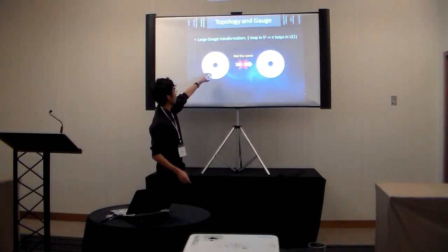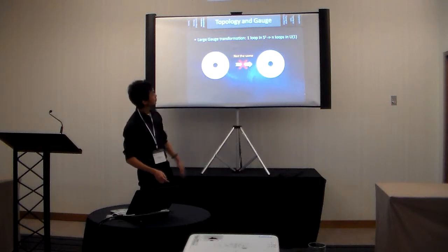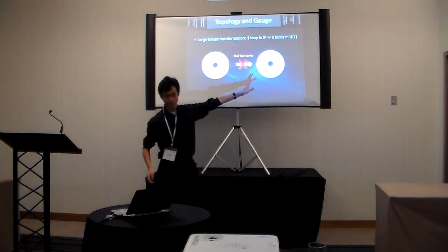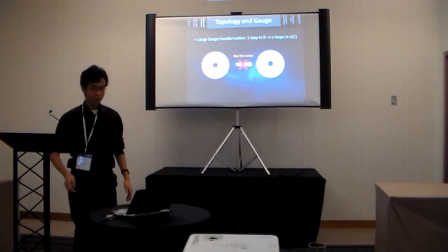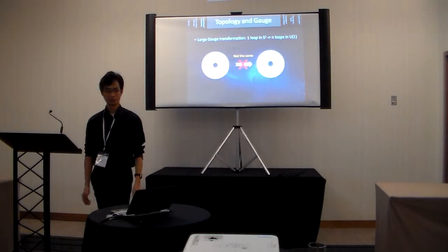So suppose I pick a large-gauge transformation that goes zero loops around the gauge, which is identity. And another gauge transformation that goes one loop around the gauge. There's absolutely no way we can deform this guy into this guy because we have a hole in the circle.